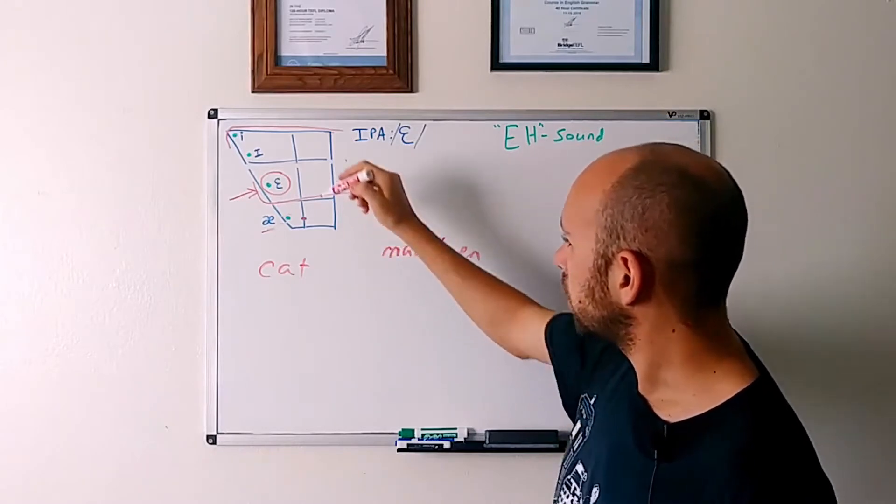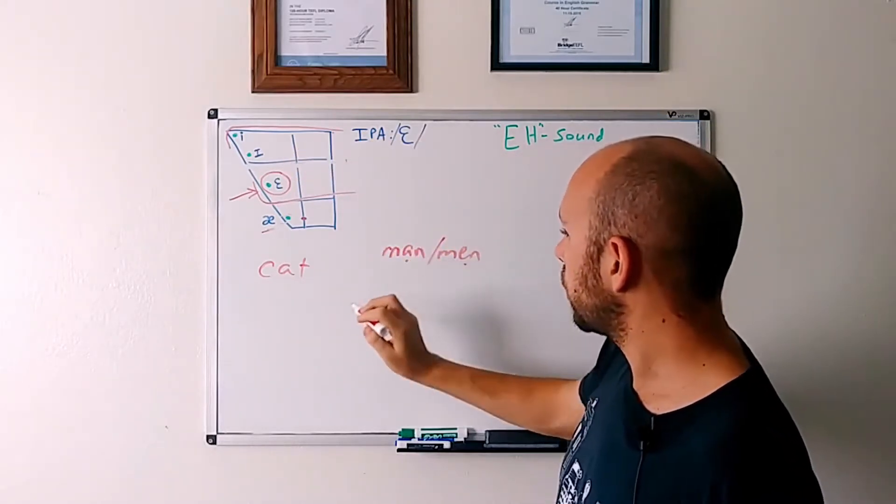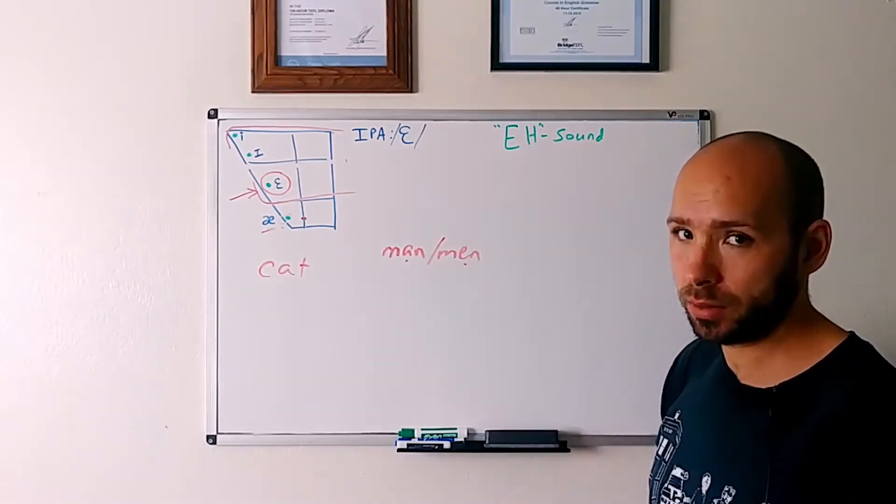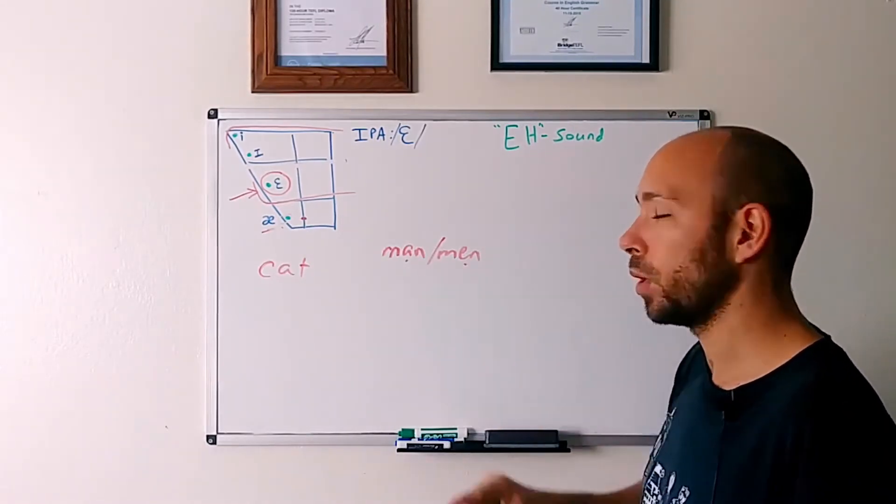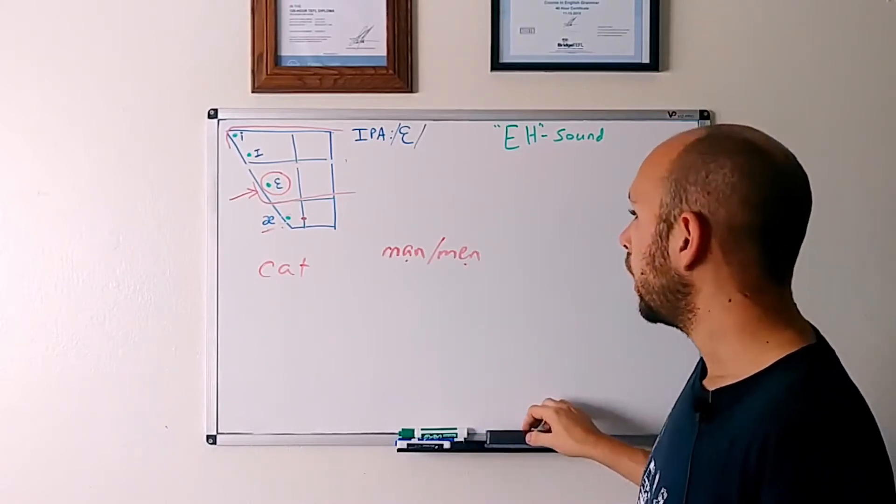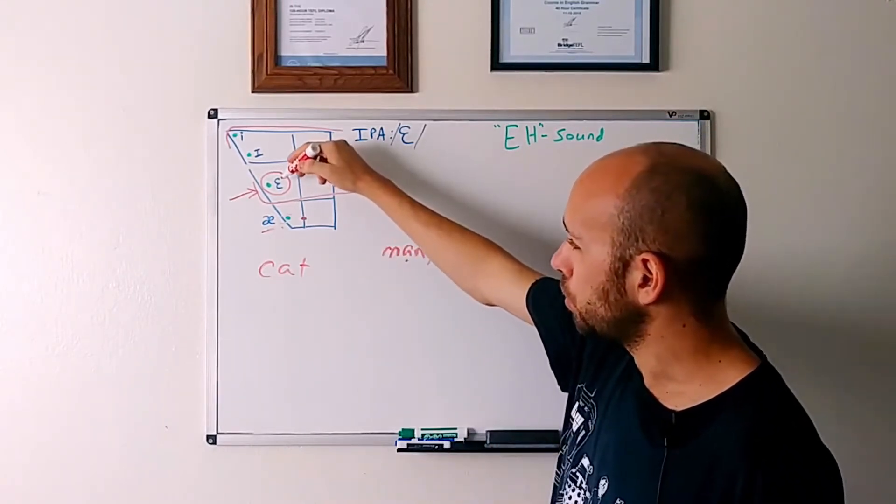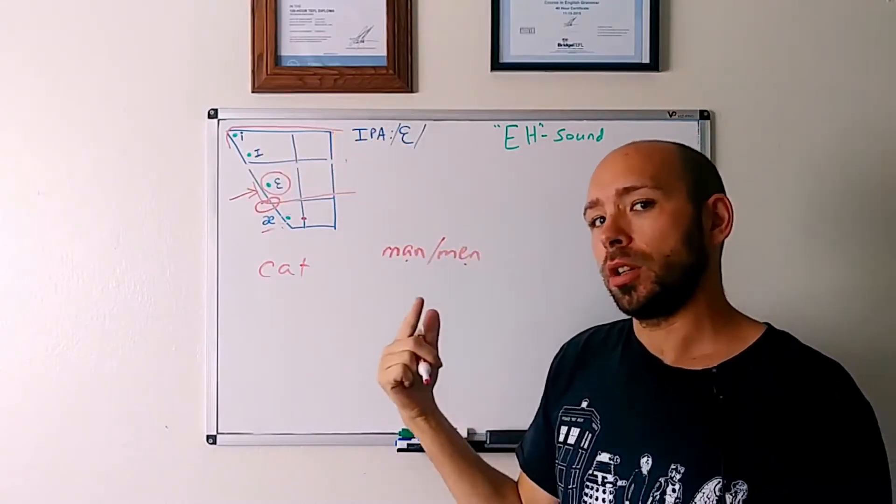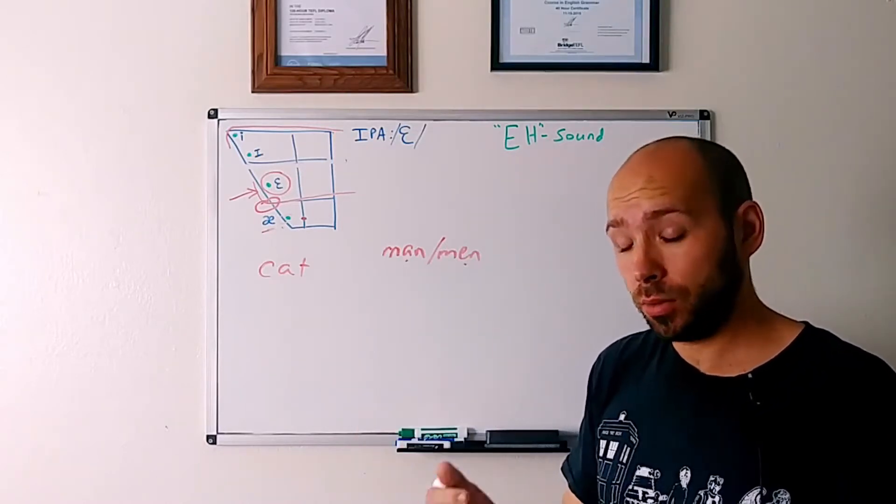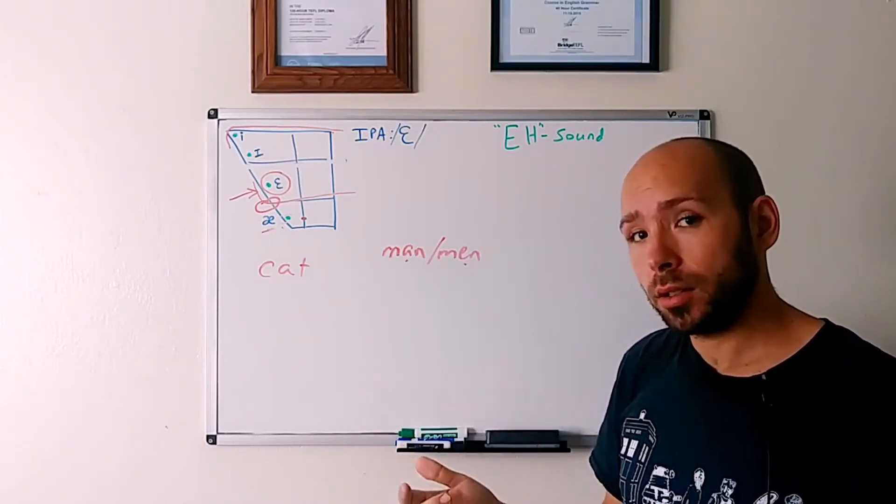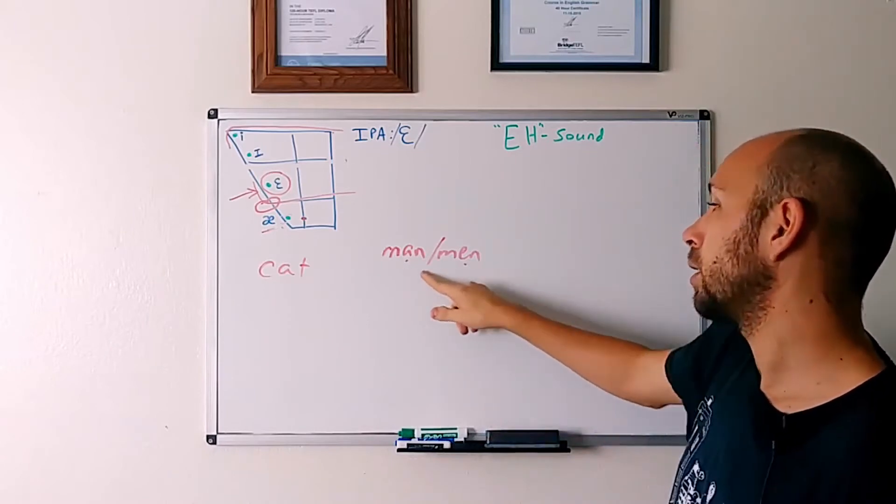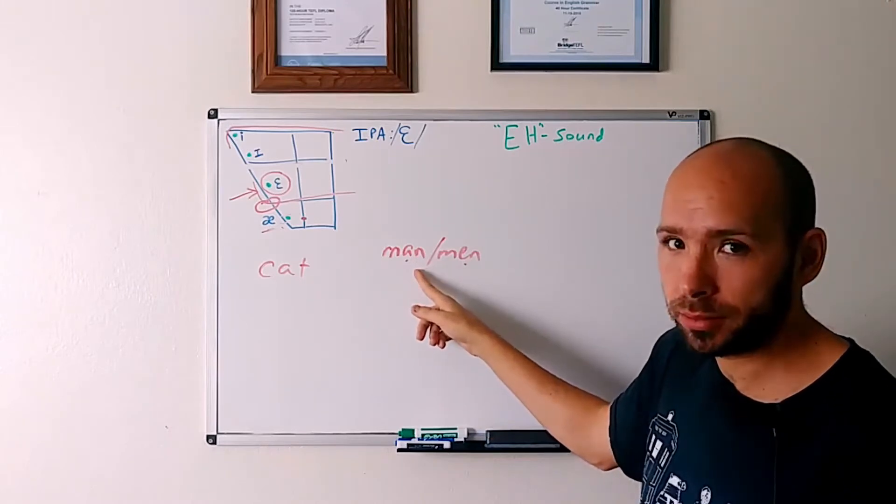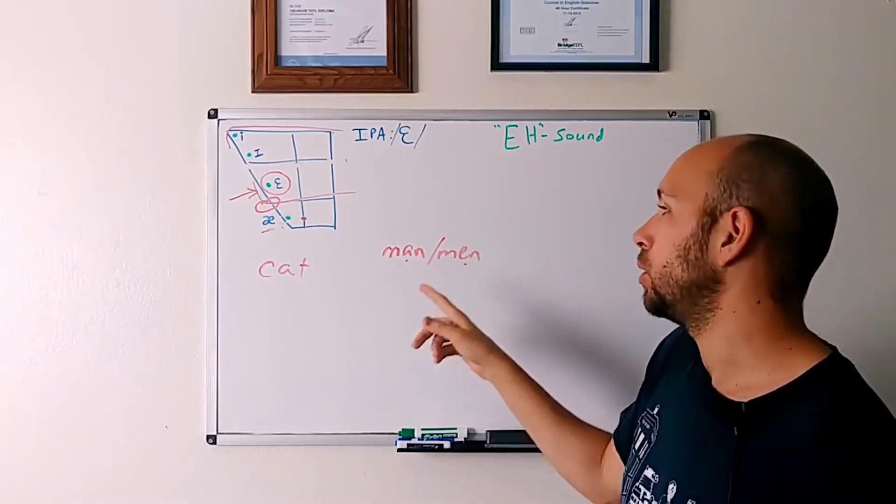But this is a very, very important pair because for example, we have man and men. This is the third sound right here. This is the fourth sound right here. There are many, many pairs that have this one little difference, EH or AH. And so if you open your mouth too much and you're sort of in between in here, an English speaker isn't going to be able to understand you. Maybe with the context, right?